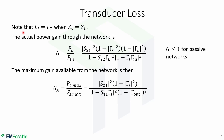Something important to note is that insertion loss equals transducer loss when the impedance of the source equals the impedance of the load. This is typically the case in microwave engineering. Given this, the actual power gain through the network is given by this expression, which is equal to or less than 1 for passive networks. The maximum gain available from the network is also given here, equal to the maximum power delivered to the load over the maximum power of the source.